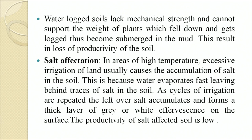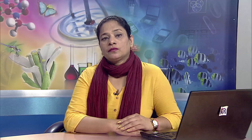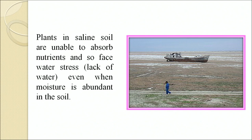Salt affectation: in areas of high temperature, excessive irrigation usually causes accumulation of salt in the soil, because water evaporates fast, leaving behind layers of salt. As cycles of irrigation are repeated, the leftover salt accumulates and forms a thick layer of grey or white effervescence on the surface. The productivity of salt-affected soil is low; plants in saline soil are unable to absorb nutrients and face water stress even when moisture is abundant.